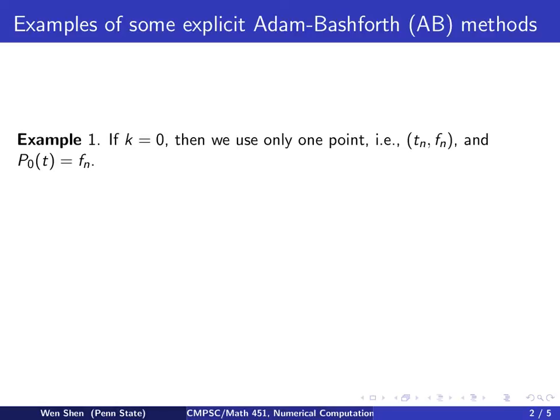The simplest example, example number 1, is when k equals 0. If you recall the method, if k is 0, then we'll be using only one point — only the point at N, nothing earlier. And you will have one point to interpolate the polynomial, which becomes a polynomial of degree 0, which is a constant. So we'll be putting p0, the polynomial of degree 0, to be simply equal to f at N, a constant, not depending on t.